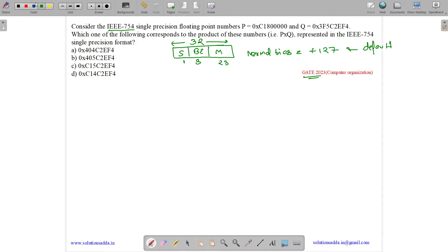Now let's see both the numbers one by one. What is P? P has been given as C1800000. This 0x means it is a hexadecimal representation. Now let's convert it into binary format. So C is 1100, 1 is 0001, 8 is 1000, then 0000 followed by more zeros. Let's group it: sign has 1 bit, then biased exponent is 8 bits, then this entire thing is mantissa.